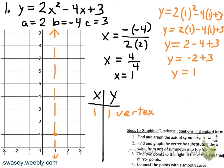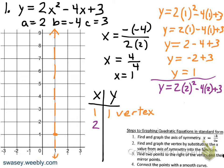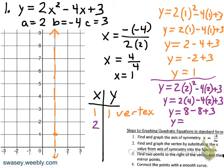We plotted a point at the vertex (1, 1). Now we're going to put in x values to the right, starting with x equals 2. So in the original equation everywhere we see x we put 2: 2 squared is 4, then 2 times 4 is 8, negative 4 times 2 is negative 8. Adding and subtracting left to right: 8 minus 8 is 0, and 0 plus 3 gives us 3. So we have a point at (2, 3).